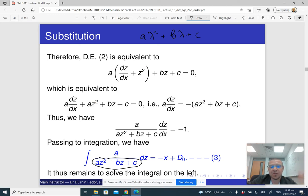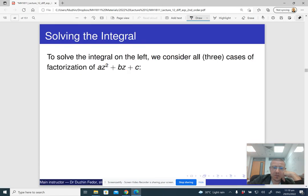And basically, in order to solve such an integral where we have a fraction and the denominator is a quadratic form, we need to change it to so-called partial fractions. And the partial fraction decomposition, in fact, depends on whether the quadratic polynomial az² + bz + c has two real roots, whether it has a repeated real root, or whether it has complex roots.